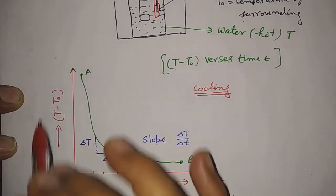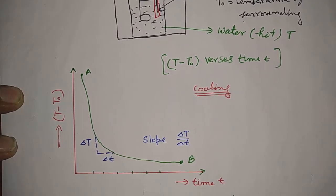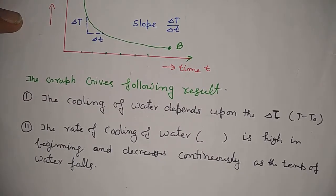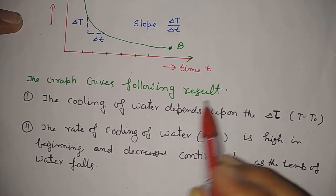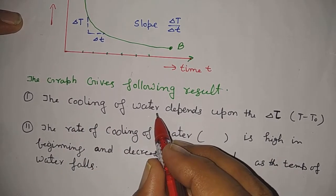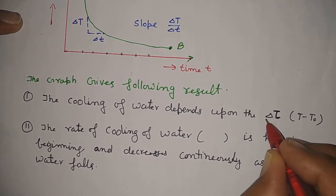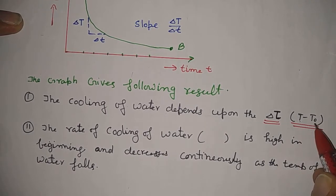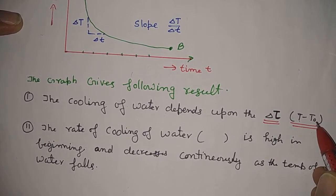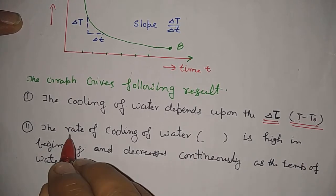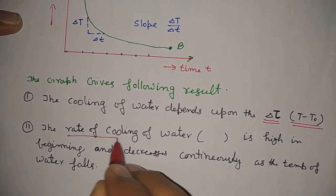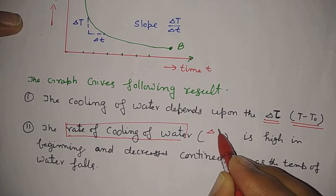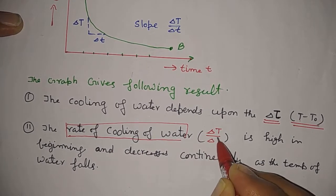By studying this graph, Newton obtained two following results. Result number one: the cooling of water depends upon temperature difference (T minus T0), where T is the temperature of the water body and T0 is the temperature of the surrounding. The rate of cooling of water — that is, the rate of loss of heat — depends upon the slope, delta T by t.